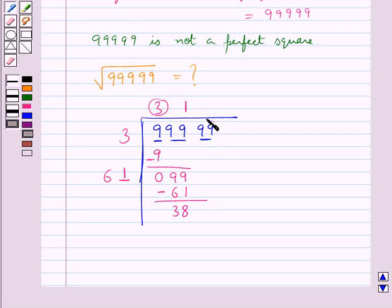Now take down this pair 99 with 38. Double this quotient. We get 62. Put a blank. Now in this blank we can put the digit 6. Since 626, 6 times give us 3756 which is less than 3899. We subtract this number from 3899. We get 143.